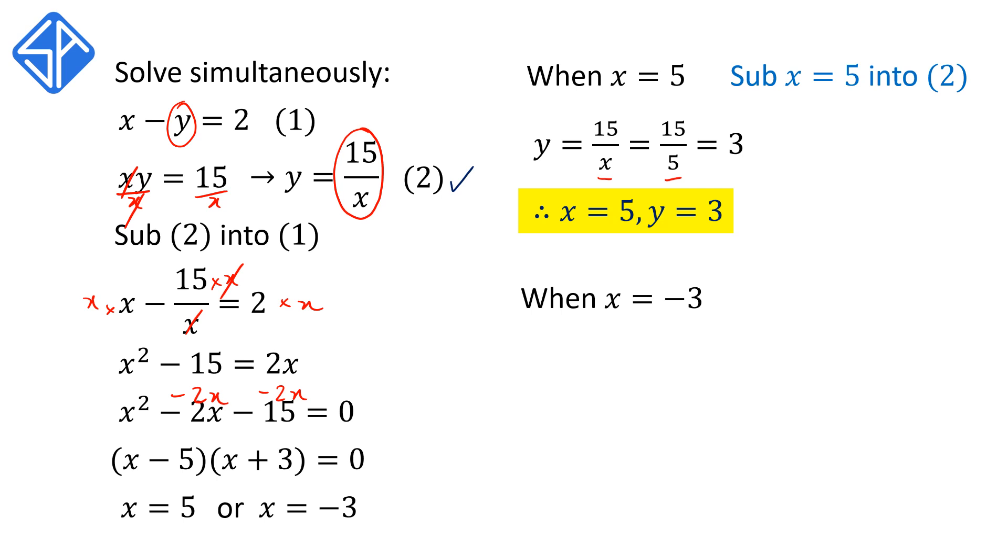When x is equal to negative 3, our other solution, we're going to do the same. We're going to substitute x is equal to negative 3 into equation 2. So from equation 2, y is equal to 15 on x, we're going to replace the x with negative 3. So we have 15 divided by negative 3, which is equal to negative 5. So therefore, when x is equal to negative 3, y is equal to negative 5.